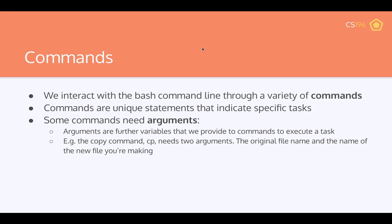We interact with the Bash command line through a variety of commands — unique statements or keywords that indicate specific tasks. A lot of it is memorization but it will eventually feel very natural. Sometimes you write a single command like `ls` and it does exactly what you want, but some commands need arguments — further variables you put after the command. For example, the copy command `cp` needs two arguments: the original file name and the name of the new file.